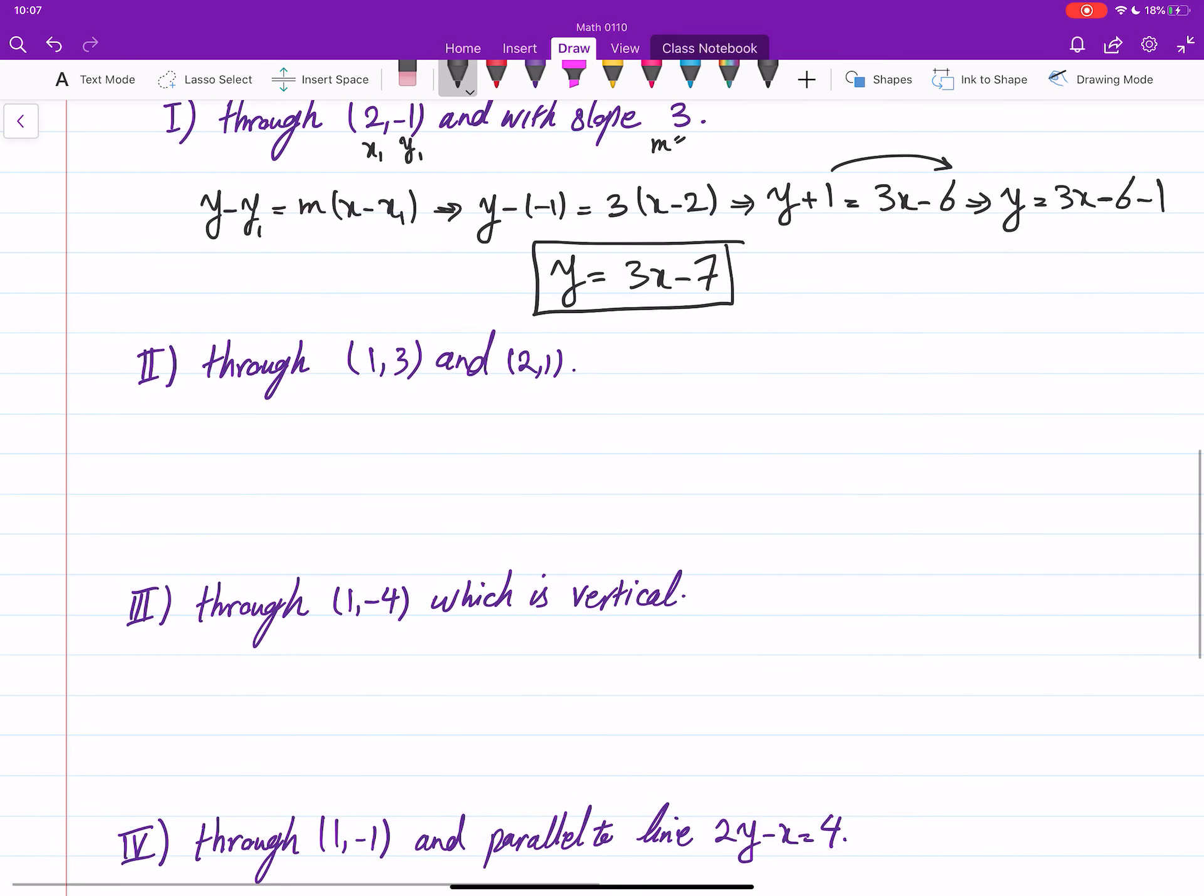In part 2, the slope is not given. Two points are given. I can take one of these to be my point, anyone you like. But slope is not given explicitly, we have to find slope. We remember that if two points on a line are given, then we can find the slope of that line. So in this case, m equals (1 minus 3) over (2 minus 1). This is negative 2 over 1, and the slope is negative 2.